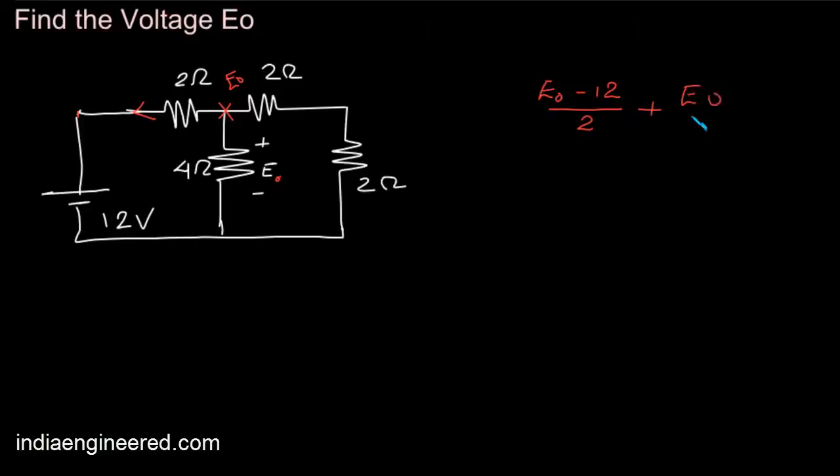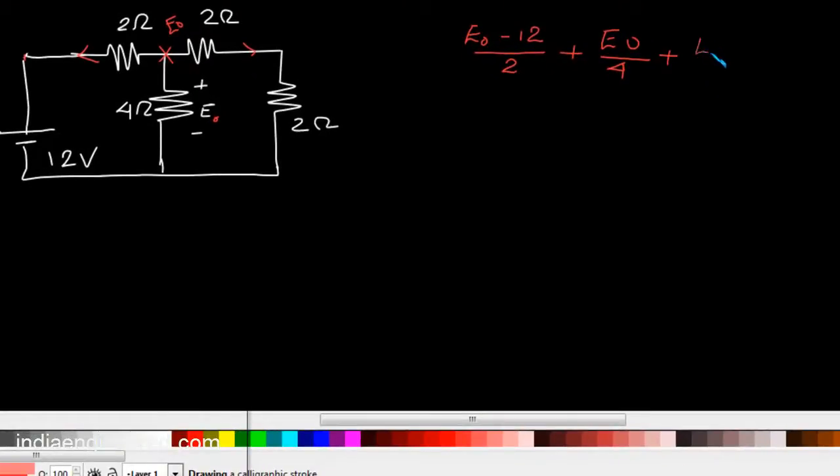Plus E0 divided by 4 is the current in this direction. Plus E0 divided by 4 is the current in this direction. So we have completed the KCL equation equal to 0.